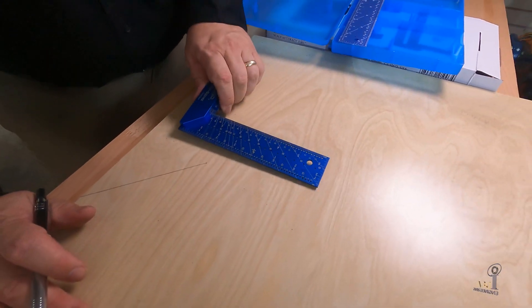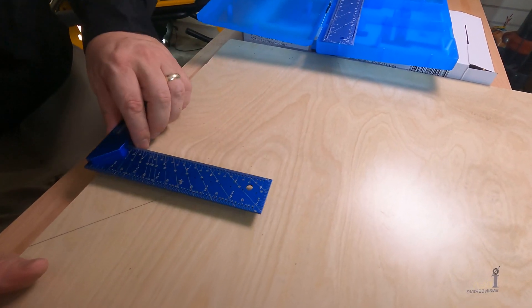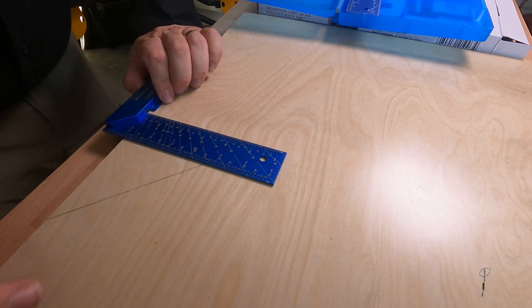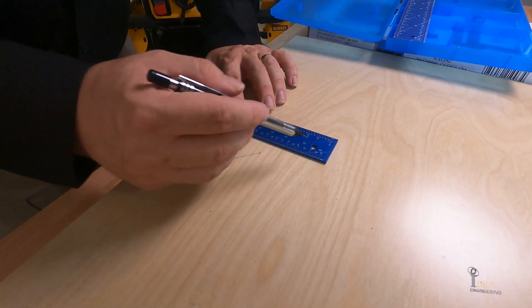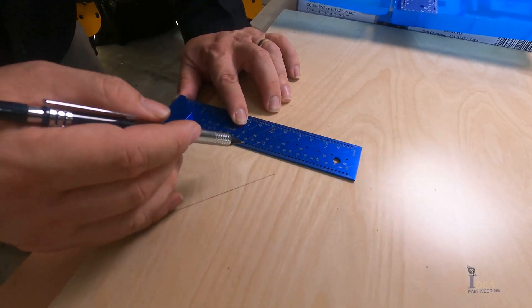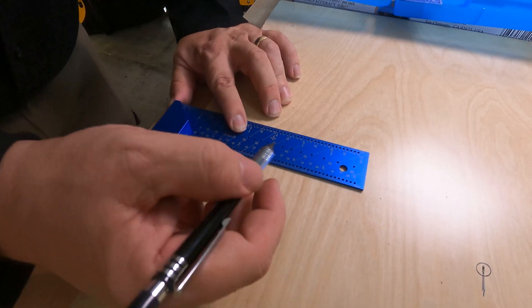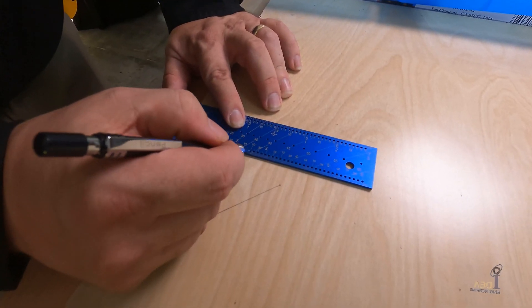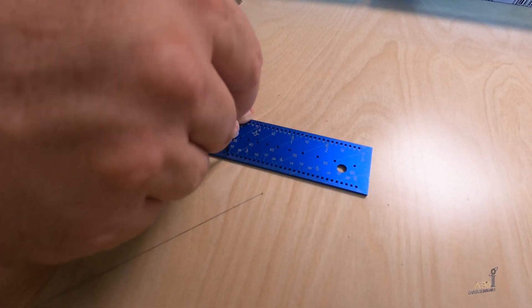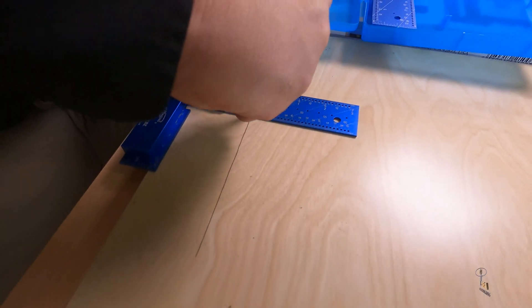Another thing you can do with this is, these outer circles, this is if we're doing layout. So we set this against the edge, and let's just say we want to make a half-inch line across the board. We can do that just like that.